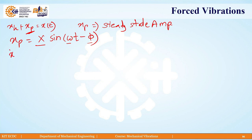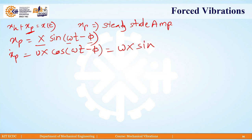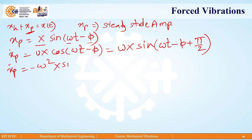Now, if you differentiate xp with respect to time, we will get x-dot-p, which will be equal to omega X into cosine of (omega t minus phi). The same can be written in terms of sine as omega X into sine of (omega t minus phi plus pi/2). Similarly, if you differentiate xp two times, we will get the acceleration, which is equal to minus omega squared X into sine of (omega t minus phi), or equivalently omega squared X into sine of (omega t minus phi plus pi).